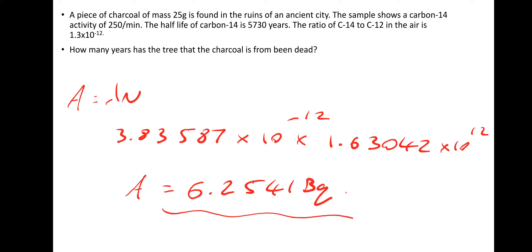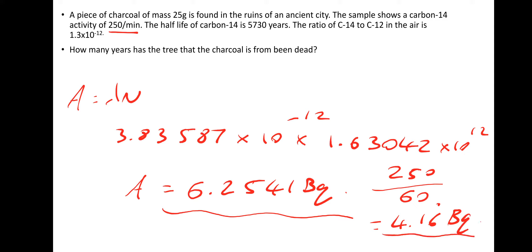We've got the original activity. Now the current activity is 250 decays per minute, and we need to turn that into decays per second: 250 ÷ 60 = 4.16 recurring Becquerel. So now we have both activities — the original and the current — and we can use the exponential decay equation A = A₀ e^(−λt) to find the time, i.e., how old the tree is.